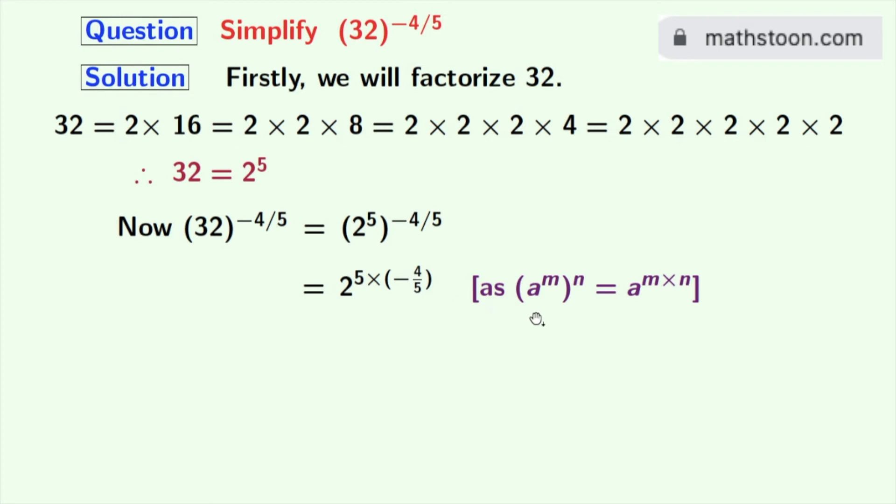As we know that a power m whole power n is equal to a power m times n. Here a is 2, m is 5 and n is minus 4 by 5.